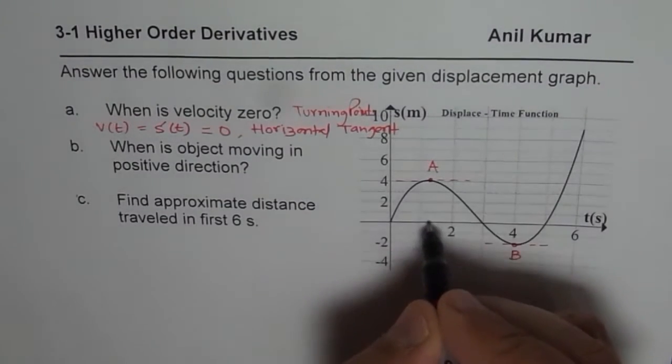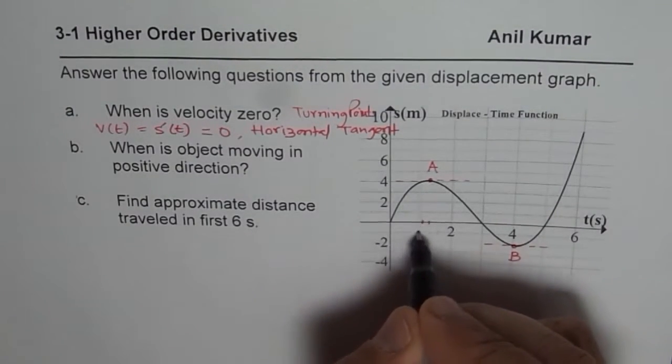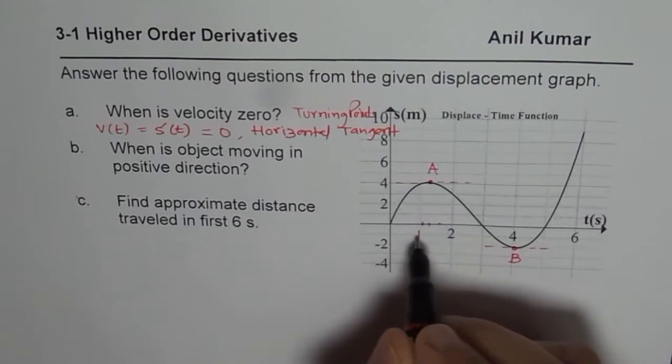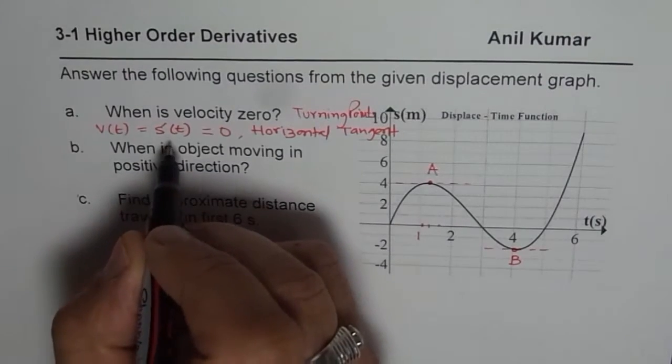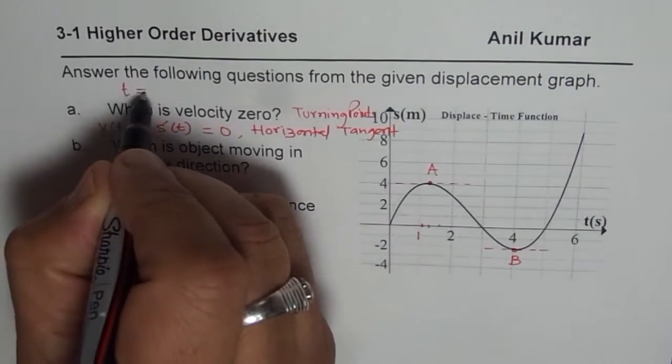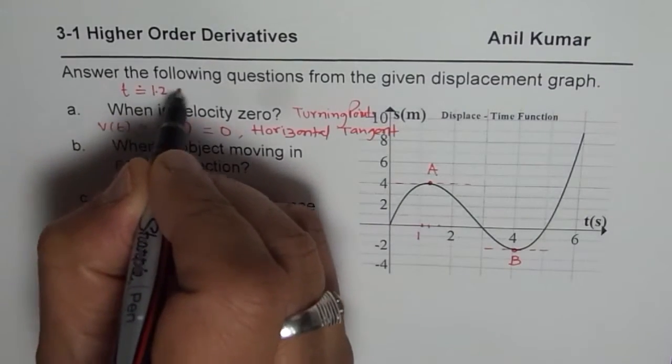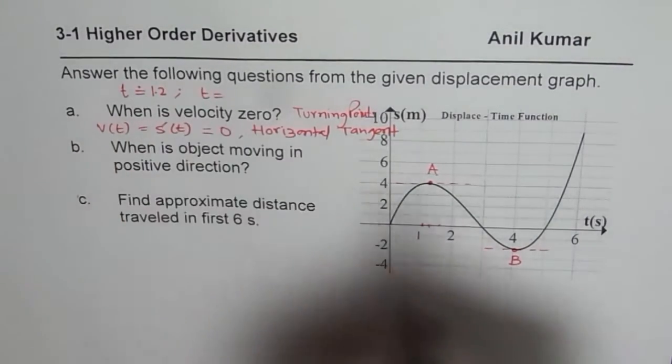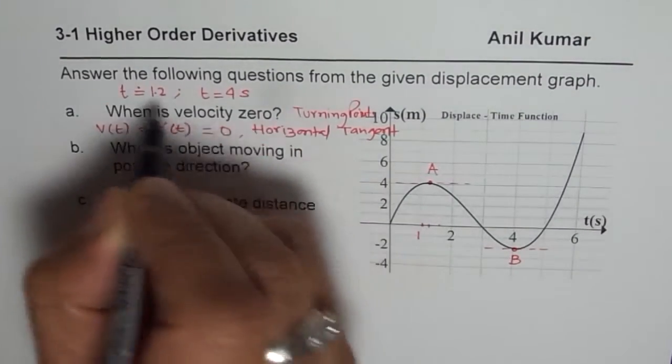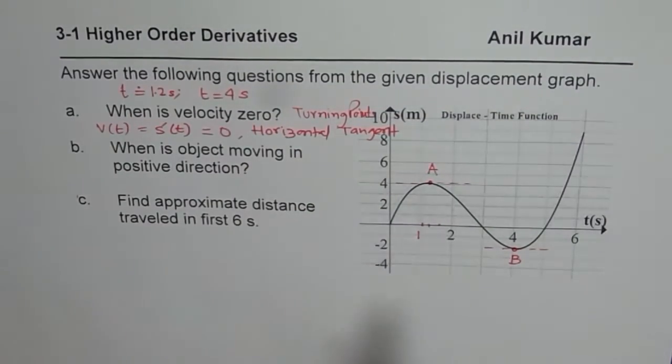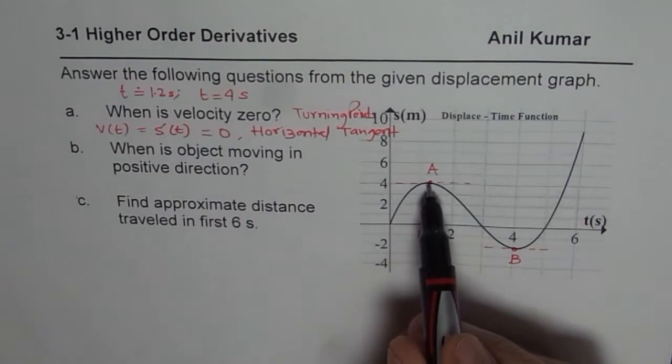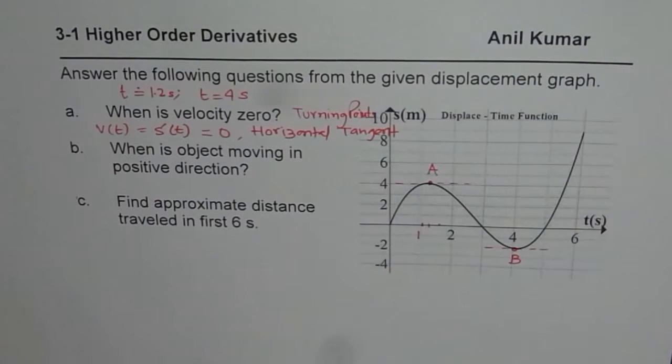So I can approximately say this is like this is 1 and here it is 2. So you could say approximately slightly more than 1. So when is velocity 0? So we can say at approximately t equals to let's say 1.2 and at t equals to 4. The units are in seconds. So we will write seconds. So at that time approximately because you can't really accurately read from the graph but that's the turning point.